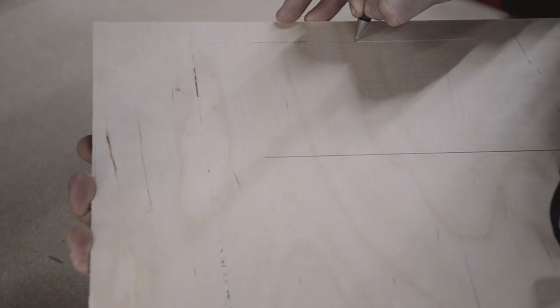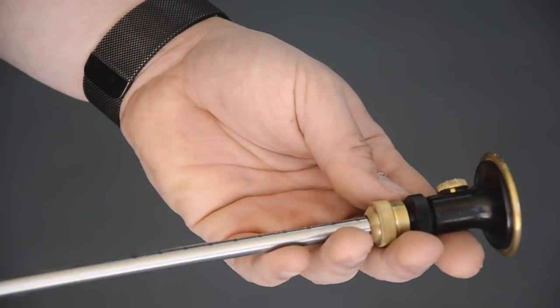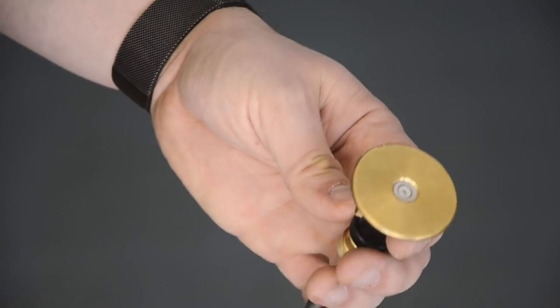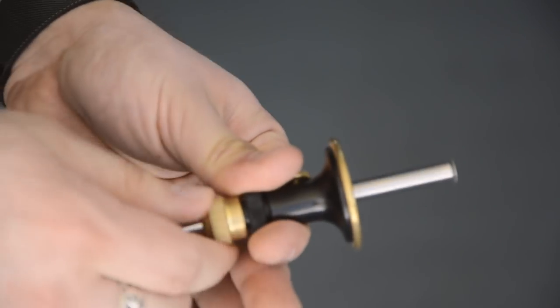If you like you can trace the scratch with a pencil after marking so that you see it better. This is a more modern version of the marking gauge. Instead of using a needle it comes with a circular blade that doesn't tear the wood fibers but cuts them. This makes the scratch finer and more precise.